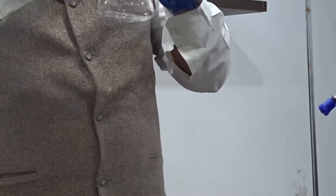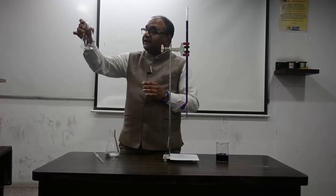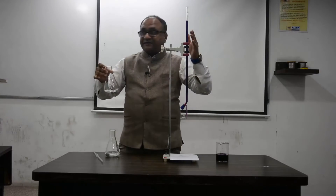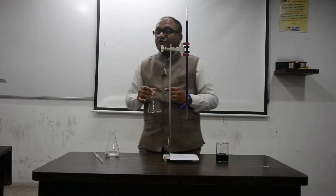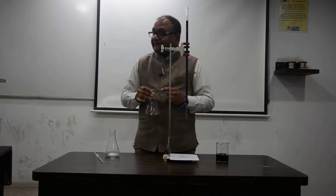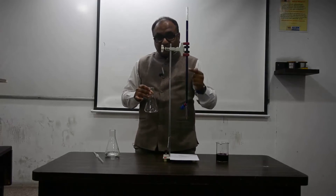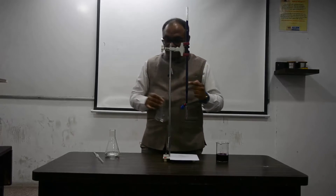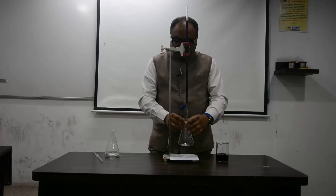The solution in the conical flask is colorless; the KMnO4 in the burette is deep purple. Now I am going to start the titration. KMnO4 is going to act as a self-indicator, meaning the moment one drop of KMnO4 is in excess, the solution will turn pink.